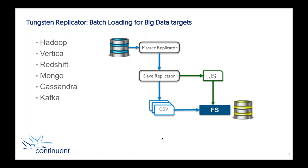Batch loading combines lots of row changes from a source database and loads them all in one big block into the target system, which is always more efficient for column-based stores. For direct native targets, we can change the format and structure as it goes in. When applying into MongoDB, we use the standard API and create a BSON document. For Kafka and Elasticsearch, we translate the information and convert it into a JSON document. Kafka technically isn't a database — it's a message bus — but you can see the flexibility of taking that information and applying it to a system that isn't a database but still has data semantics.